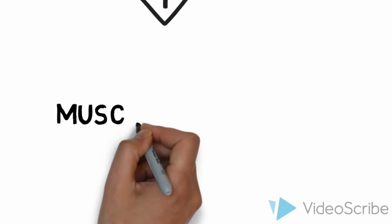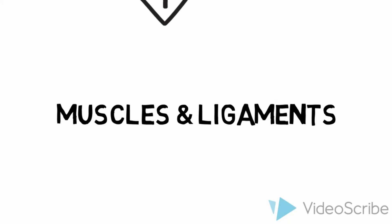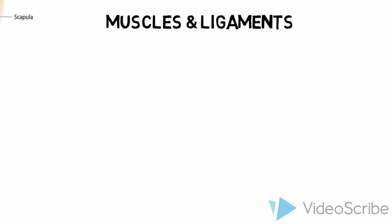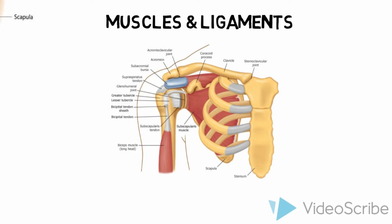When looking at the muscles, ligaments, and soft tissues, these provide additional stability to the joint. The integrity of the rotator cuff muscles is essential in maintaining the correct positioning of the humeral head. Damage to these muscles could result in decreased stability of the joint. Capsular ligaments also add additional support, and the inferior glenohumeral ligament is the most frequently injured ligament in anterior dislocations.